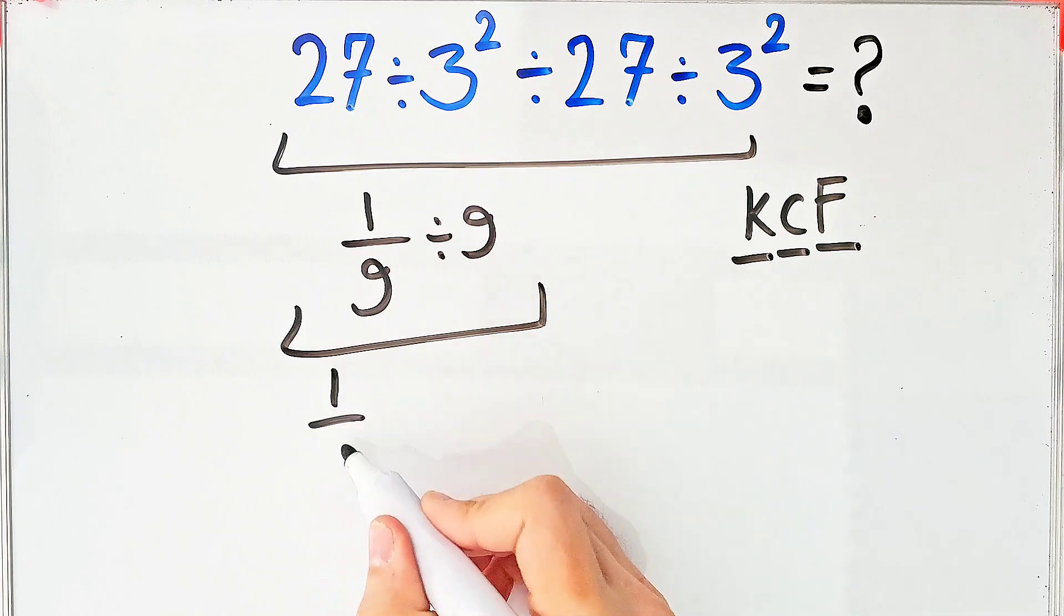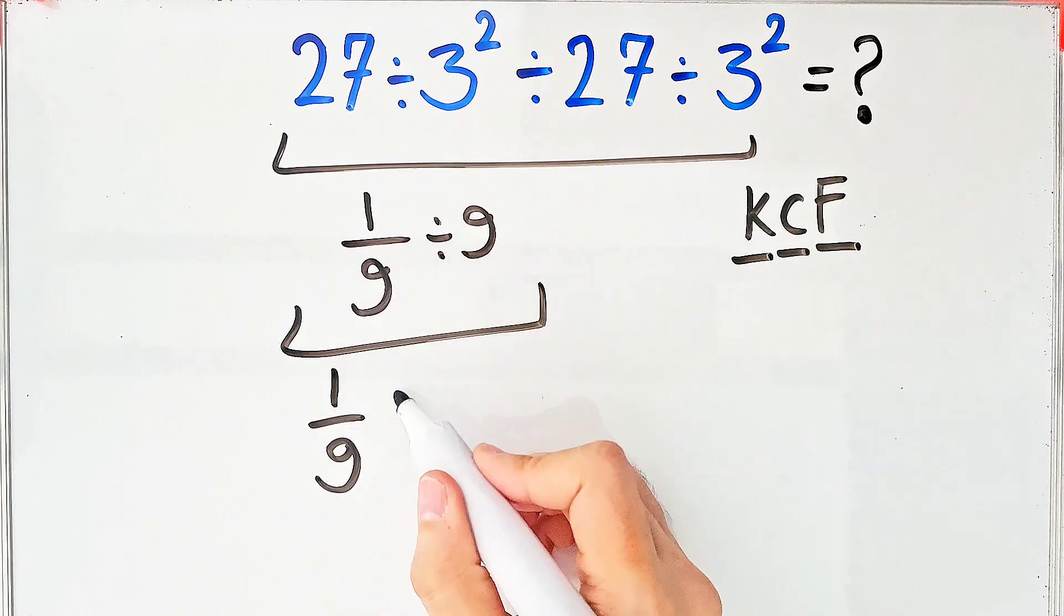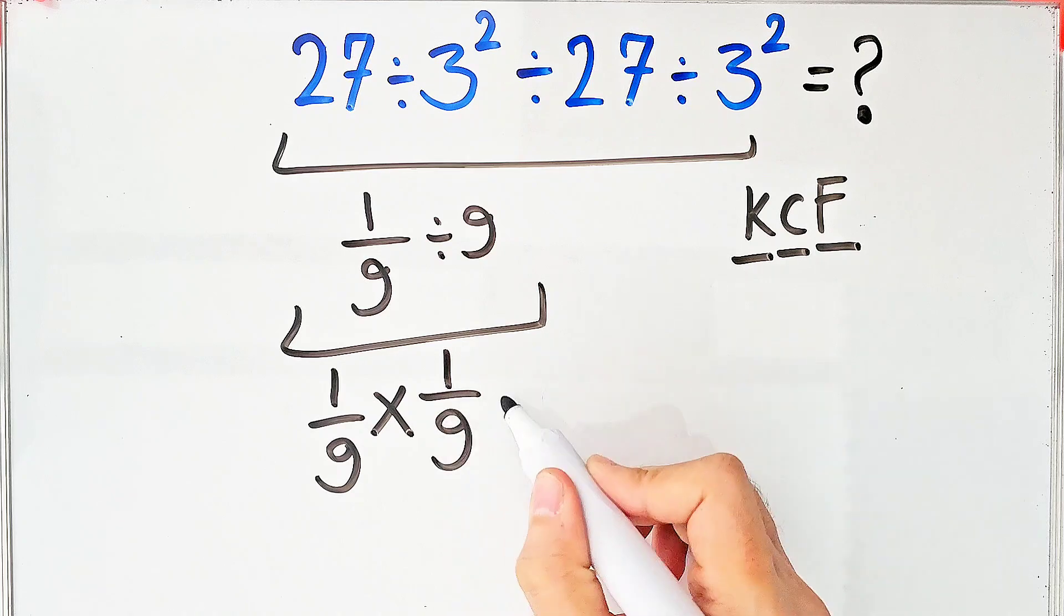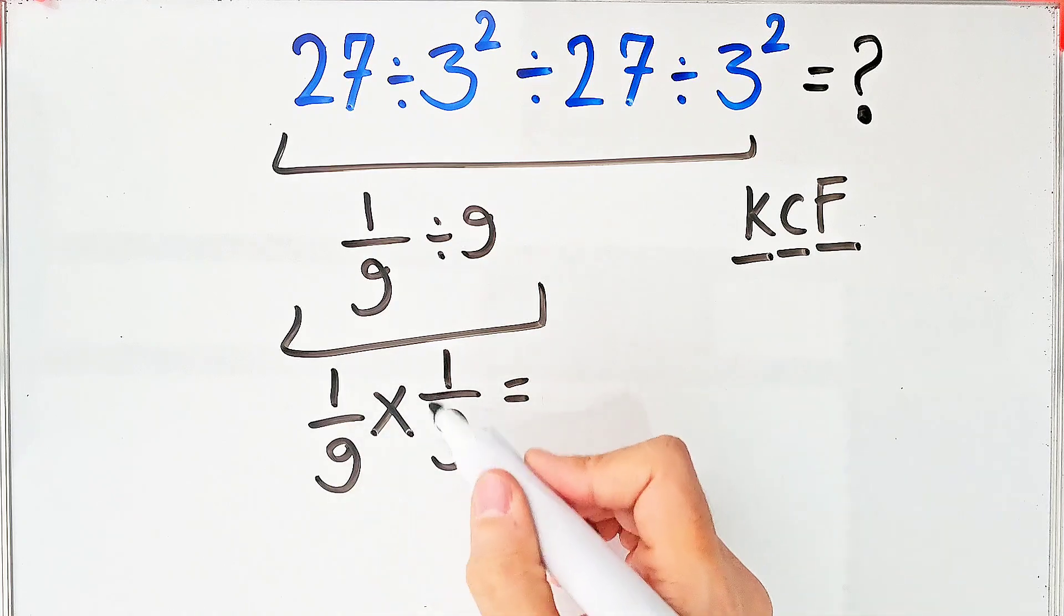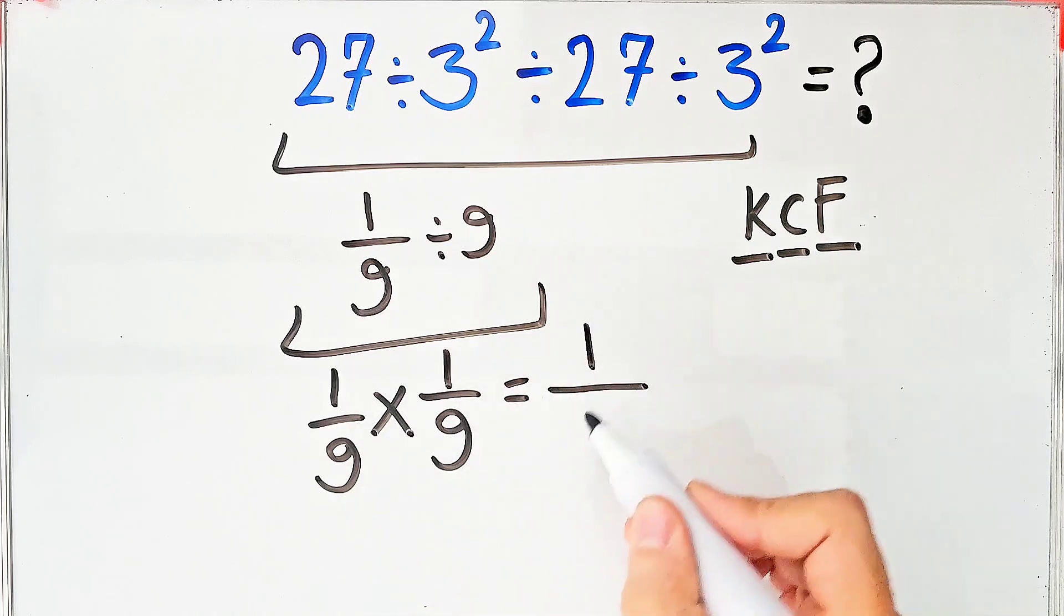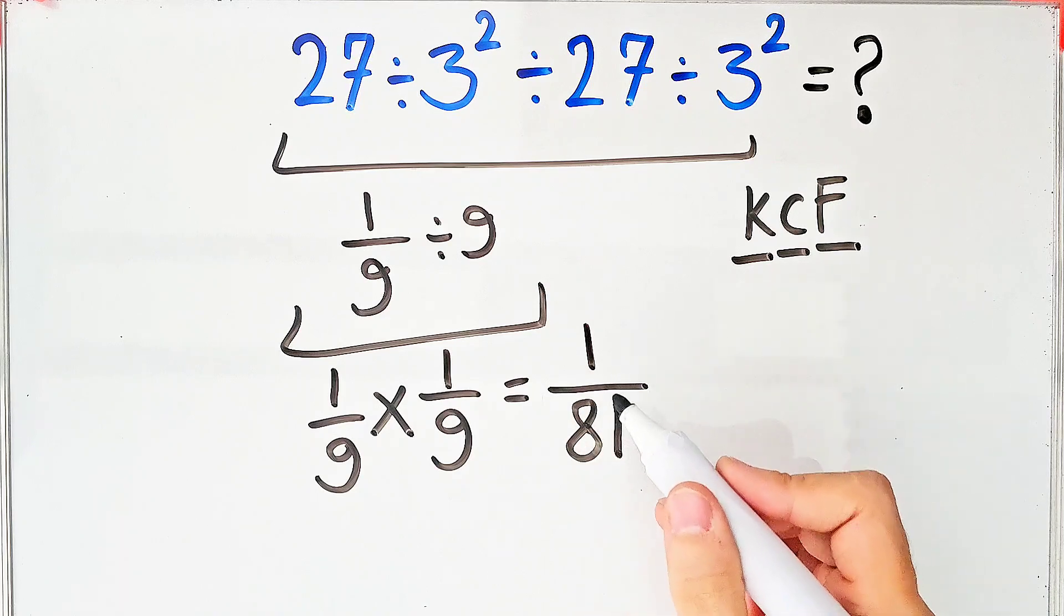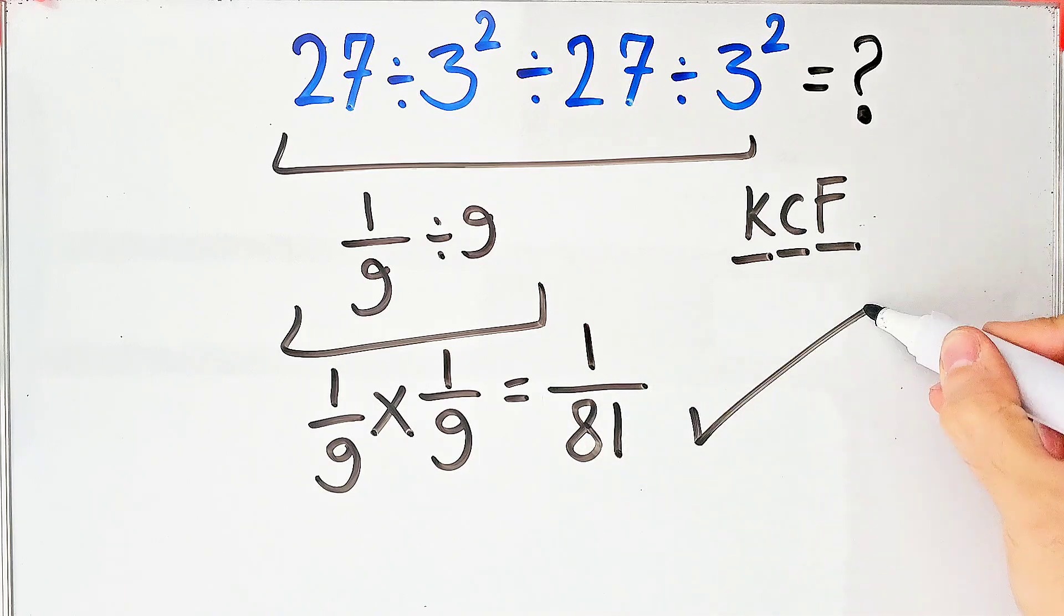We keep the first fraction as it is. After that, we change the sign. After that, we flip the second number. Now we have 1 over 9 times 1 over 9, which equals 1 over 81. The final answer of this question equals 1 over 81.